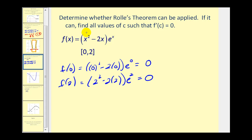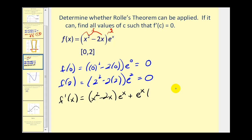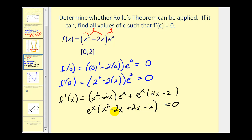We need to find the derivative and see where it equals zero in this interval. We'll apply the product rule. f prime of x equals the first function times the derivative of e to the x, which is e to the x, plus e to the x times the derivative of x squared minus two x, which is two x minus two. Before setting this equal to zero, we can factor out e to the x, leaving x squared minus two x plus two x minus two equals zero. Combining like terms gives e to the x times x squared minus two equals zero. Since e to the x is never equal to zero, we set x squared minus two equal to zero.